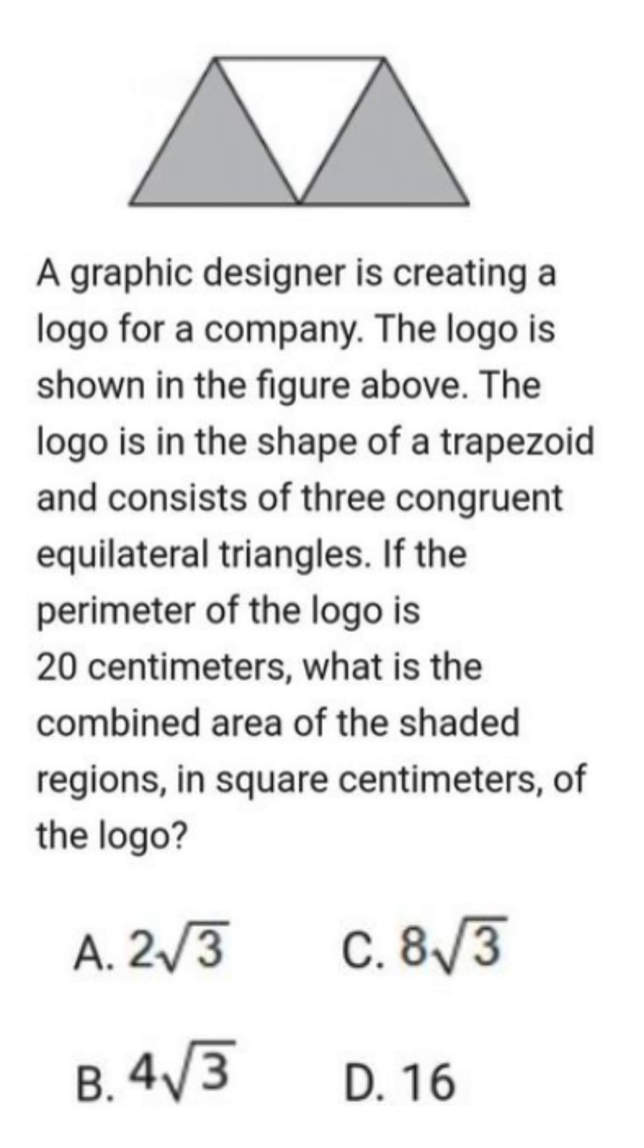A graphic designer is creating a logo for a company. The logo is shown in the figure above. The logo is in the shape of a trapezoid and consists of three congruent equilateral triangles. If the perimeter of the logo is 20 centimeters, what is the combined area of the shaded regions in square centimeters of the logo?